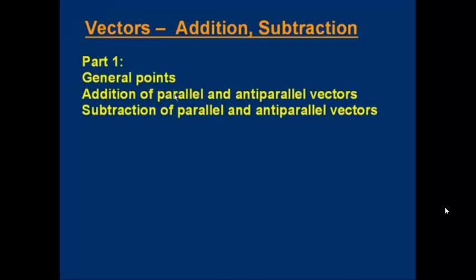I'm assuming you've seen and understood the previous lessons on vectors. There's quite a lot to get through and I don't want to fry your brain, so the lesson is being split into three parts. This is part one. We'll cover some general points, then we'll find out how to add together vectors that are parallel and vectors that are anti-parallel.